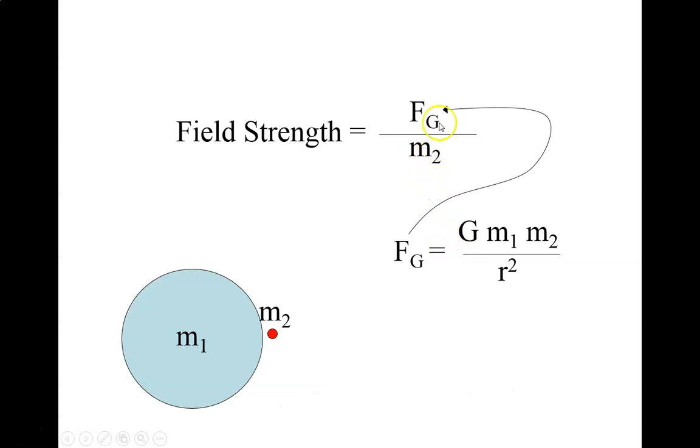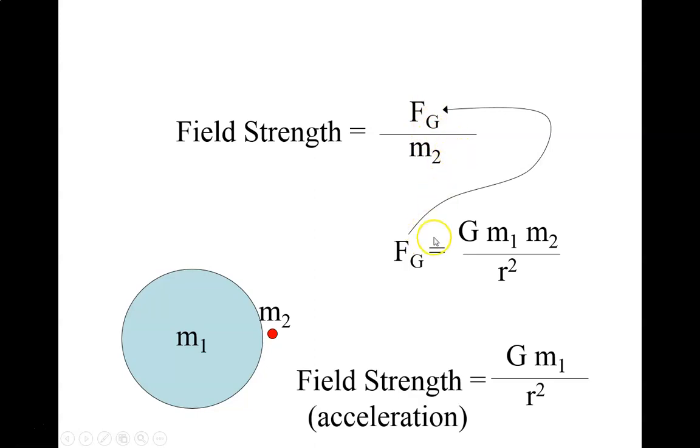Now we can plug in Newton's universal law of gravitation into this. And we're not going to be doing much with this. I'm just kind of showing you this. So we can plug in universal law of gravitation, big G, M1, M2 over R squared. And what's going to happen is this M2, or the mass that we're using to test, gets divided out. And the field strength, or the acceleration, is equal to big G times the mass of the object that's creating the field, divided by our distance from the center of that object squared.